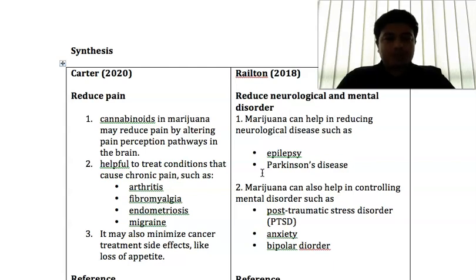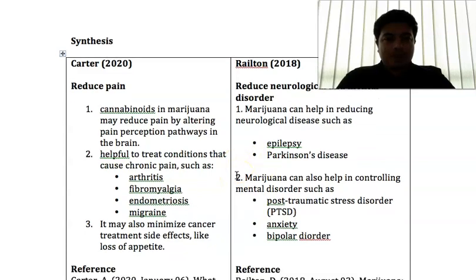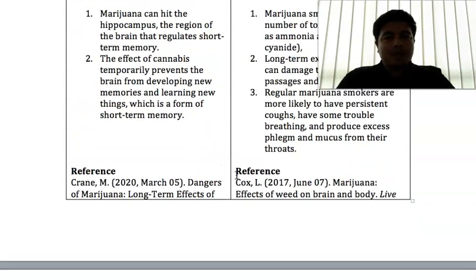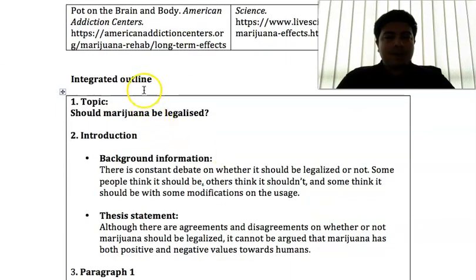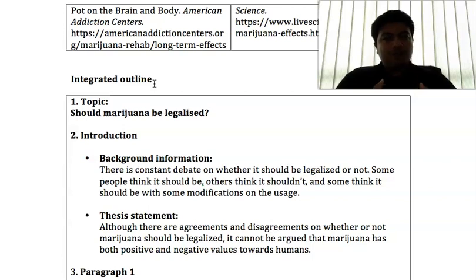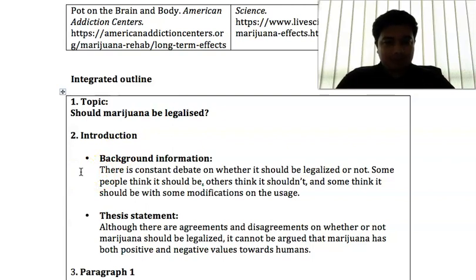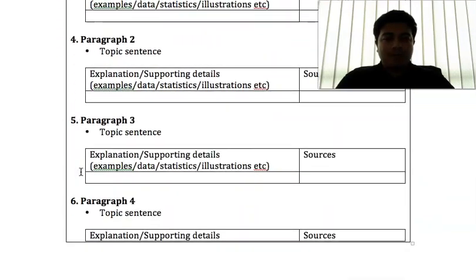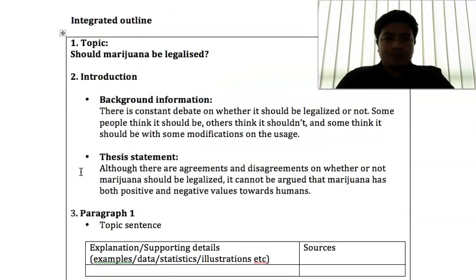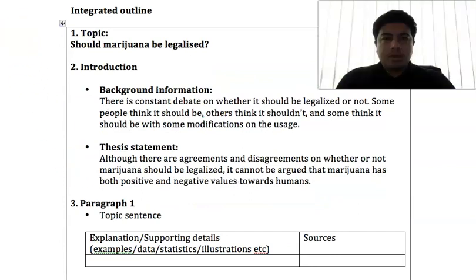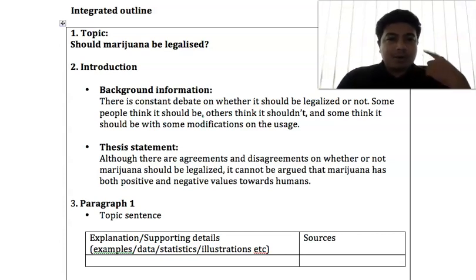From the synthesis I have, I am now going to create what I call an integrated outline — the outline of my research paper or academic essay. When writing a research paper, it must follow a proper format: we need an introduction with background information, a thesis statement, body paragraphs, and then a conclusion. My topic is 'Should marijuana be legalized?'